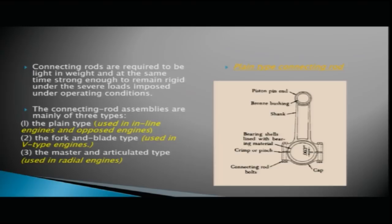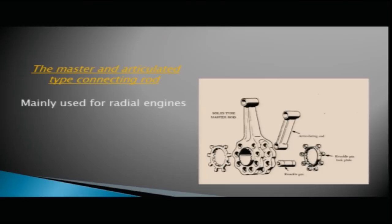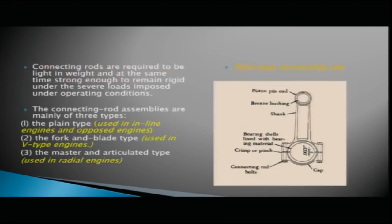In the diagram you can see the plain type connecting rod with a small piston pin end and a larger crankshaft end with a bronze bushing. The fork and blade type is used mainly on V-type engines and the master and articulated type is used for radial engines.